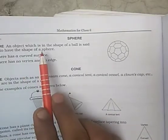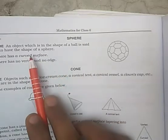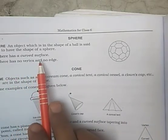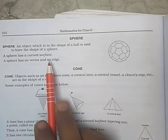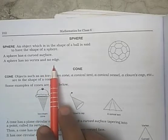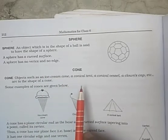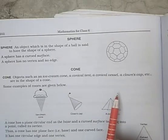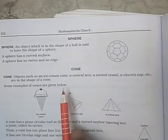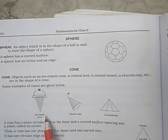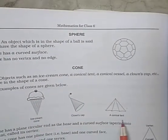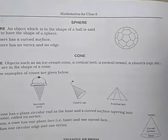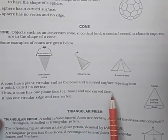Next is a sphere. An object in the shape of a ball is said to be in the shape of a sphere. A sphere has one curved surface. A sphere has no vertex and no edge. Objects such as ice cream cone, conical tank, conical wager, clown cap, etc. are in the shape of a cone. A cone has one plane face and one curved surface.